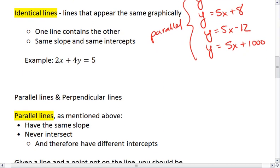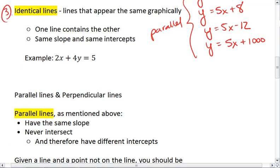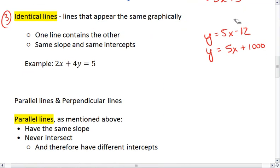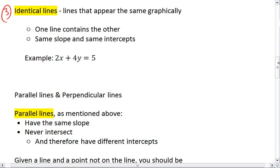The last relationship we'll look at is identical lines. And identical lines are lines that appear the same graphically. We can say that it means that one line contains the other, and in these cases, the lines have both the same slope and the same intercepts. For example, if we were given the line 2X plus 4Y equals 5,